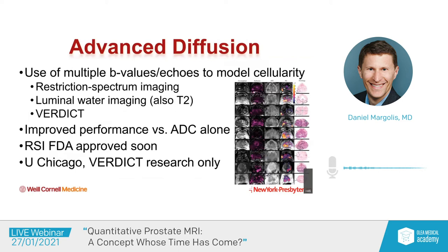The main drawback is these require a different acquisition algorithm, a different pulse sequence compared with standard diffusion imaging. This is a study we did at UCLA looking at ADC and RSI, and RSI better correlated with sites of tumor on whole mount histopathology in most cases.